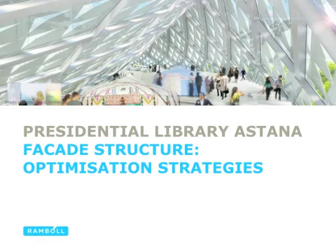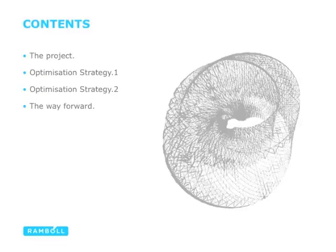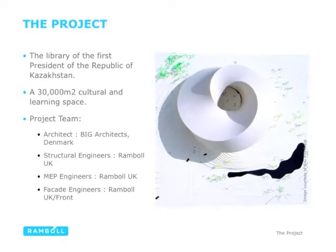This is a short presentation describing some of the optimization strategies we've adopted for the facade structure of the Presidential Library in Astana. The presentation touches on two optimization strategies and then concludes by talking about the way forward.